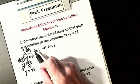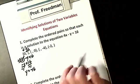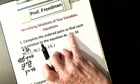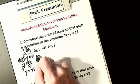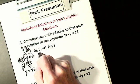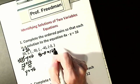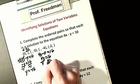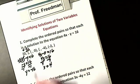The next one: if y is 0, that just disappears. I have 4x minus 0 equals 16, so 4x equals 16. Divide by 4: x is going to be 4. So I have the point (4, 0).